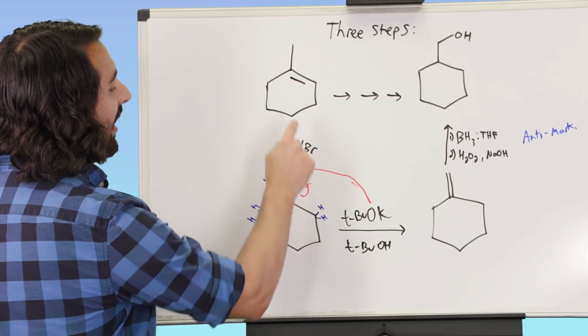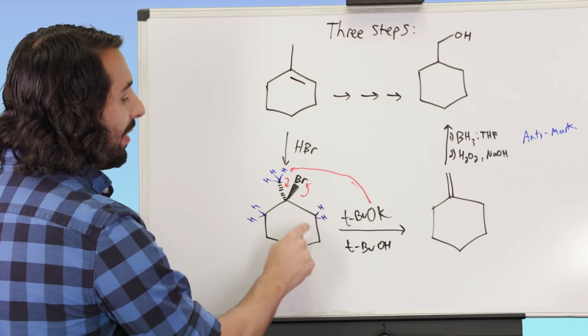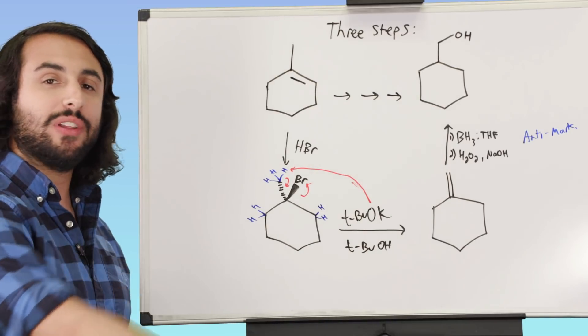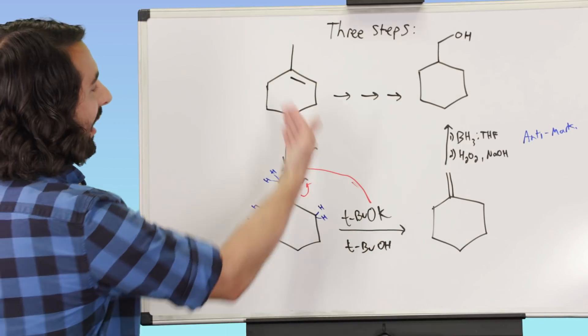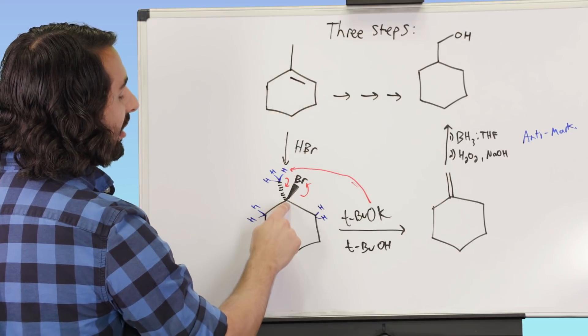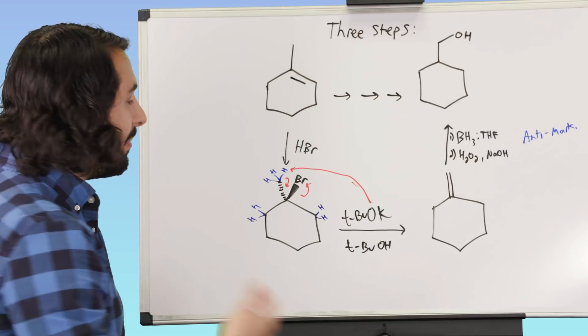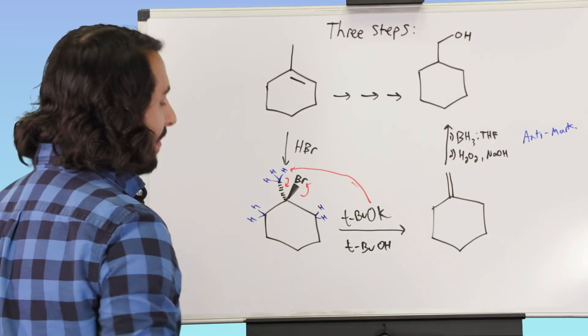We started here and we knew we needed to do some Markovnikov chemistry because we wanted to get the functionality here and not here. If we got the functionality here, then we'd be looking at these possibilities for pi bonds upon elimination, and then we're going the wrong direction around the molecule. We want to get going that way.